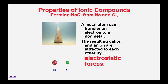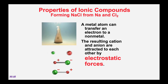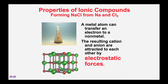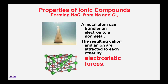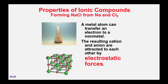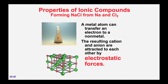The reaction produces sodium chloride. When sodium and chlorine react, the sodium transfers an electron to the chlorine, forming oppositely charged ions. Although the compound has no net charge, its component ions of opposite charge attract each other to form ionic bonds. In turn, these ions are attracted to others, and an ionic solid called a crystal lattice is created.